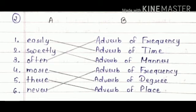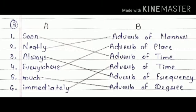Now third is soon, neatly, always, anywhere, much, and immediately. So soon, soon kya hai, adverb of time, koi time suggest karata hai. Neatly, wo ek manner hai, to hoga adverb of manner. Always, to always ho adverb of frequency. Fourth one is everywhere, it suggests a place, so ayega adverb of place. Much, adverb of degree. And immediately, adverb of time.